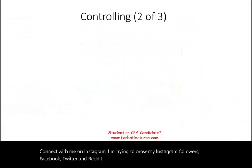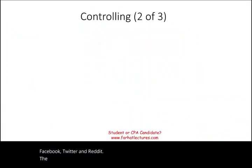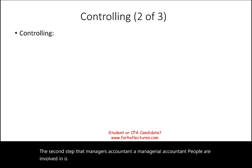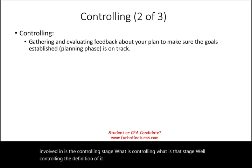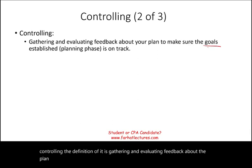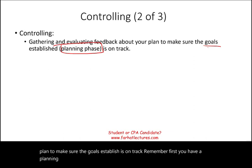The second step that managerial accountants are involved in is the controlling stage. Controlling is defined as gathering and evaluating feedback about the plan to make sure the established goals are on track. Remember, first you have a planning phase — that was step one. Now this is step two: the plan is in motion.